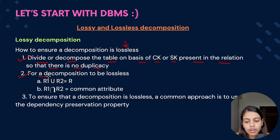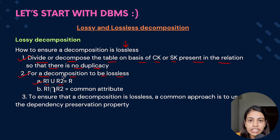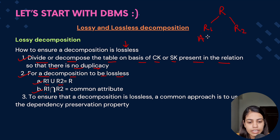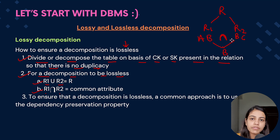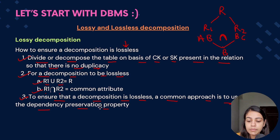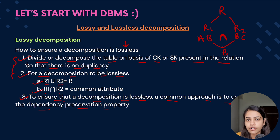For a decomposition to be lossless: first, R1 union R2 should equal R — whenever we do a union between the decomposed tables it should result in the original table. Second, R1 intersection R2 should equal the common attribute. If R1 has attributes AB and R2 has BC, then R1 intersect R2 should give the common attribute B. Third, a common approach to ensure lossless decomposition is to use the dependency preservation property, which we will cover in the next set of videos.